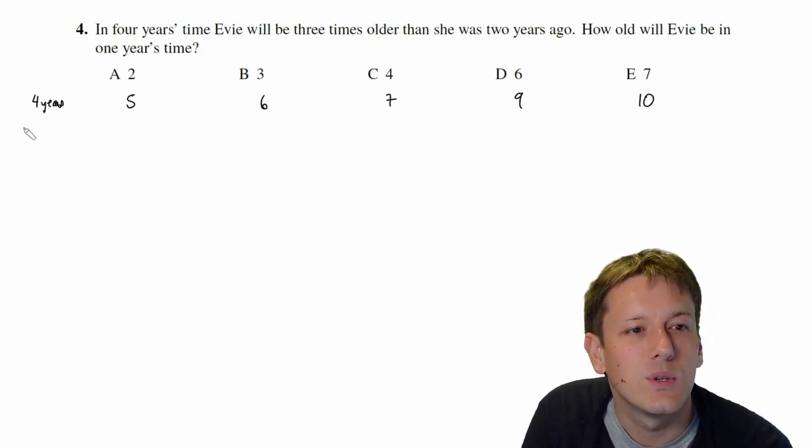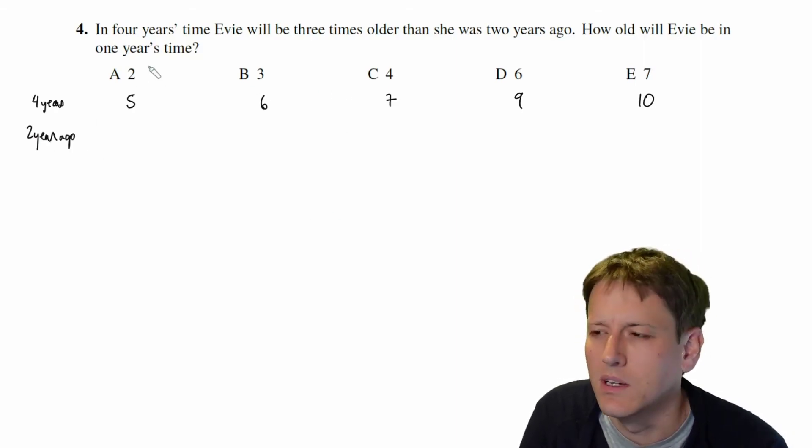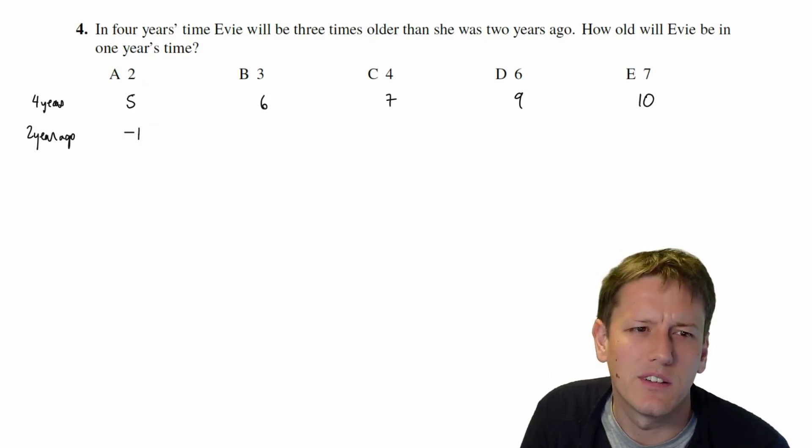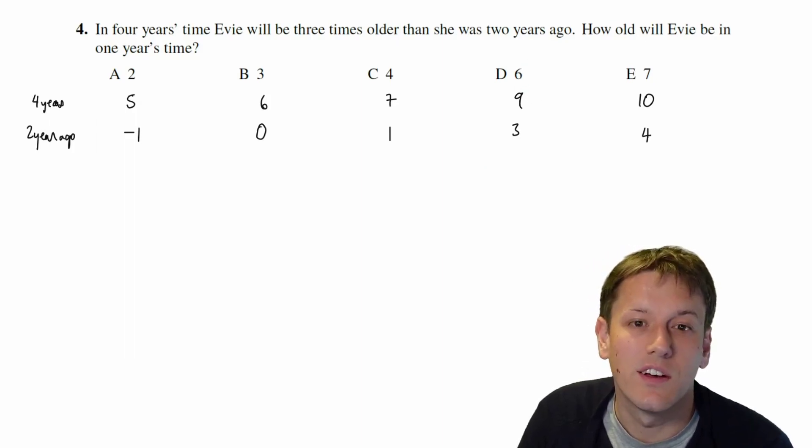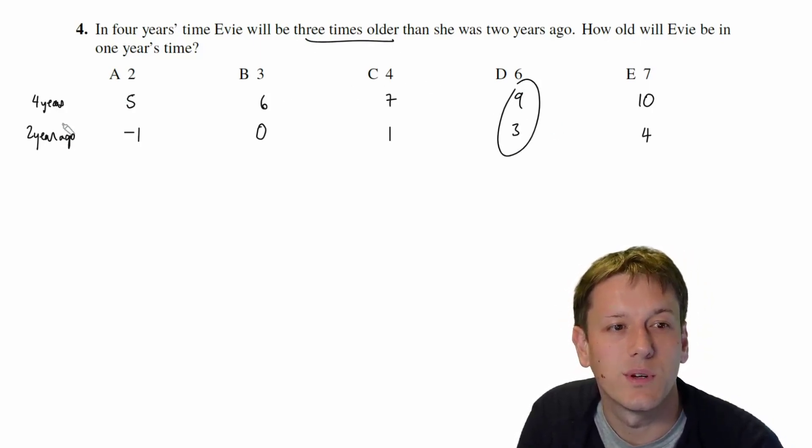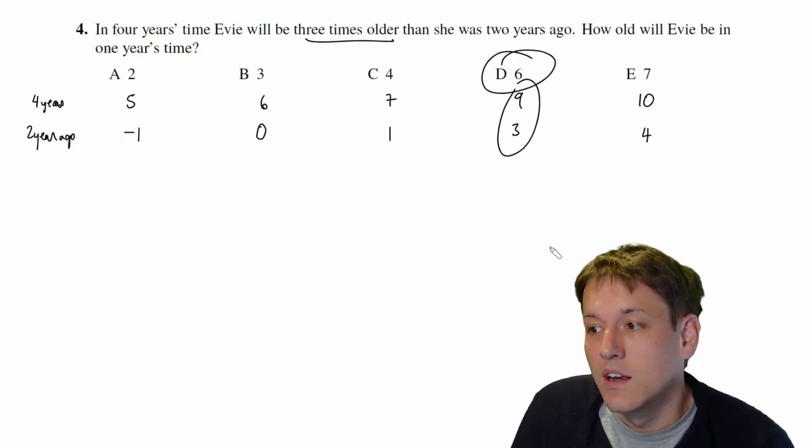And two years ago, well if she's two in one year's time, two years ago she would have been minus one, so I don't think that's going to be the answer. Here in the same, here it would be zero. We've got to basically subtract three from each of these, so that would be 1, 3, and 4 here. And it says we need one of these to be, in four years time she's three times older than she was two years ago, and we can just see from these options then that this one here, nine is three times three. So she's three times older in four years than she was two years ago, and the answer must be D, 6.